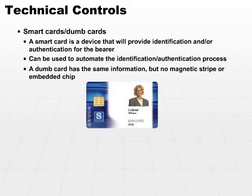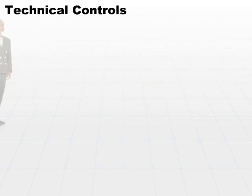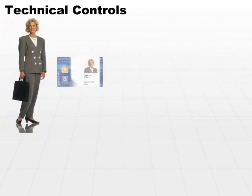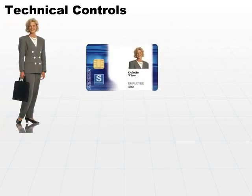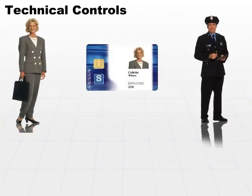A dumb card has the same information but no magnetic stripe or embedded chip. It just has a name tag and your picture. What you would do is show the name tag and your picture to the security guard, because you'd have to have an actual guard standing guard over the entryway, and then the security guard would make the decision — yes, I will allow this person access, or no, I will not.